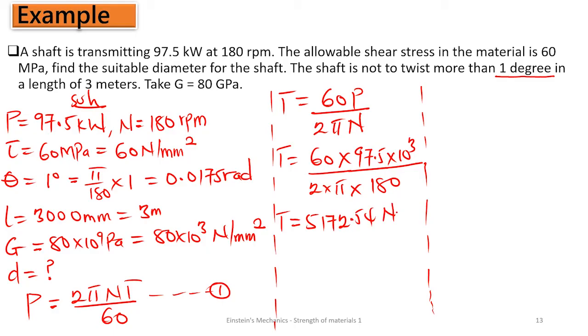This gives us a torque of 5172.54 Newton meters. Why Newton meter? Because I'm working in standard units where the power is in watts and all the other units are in their standard form.